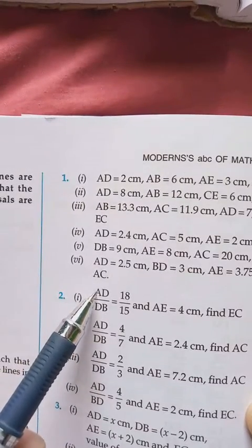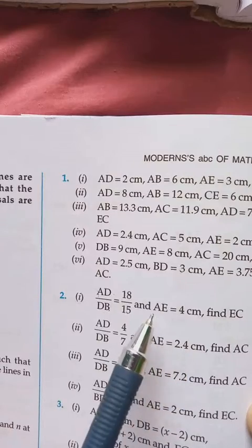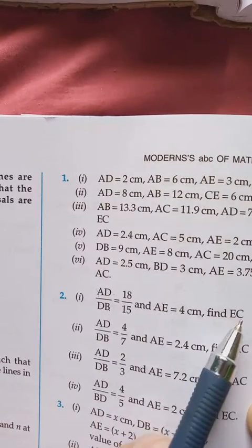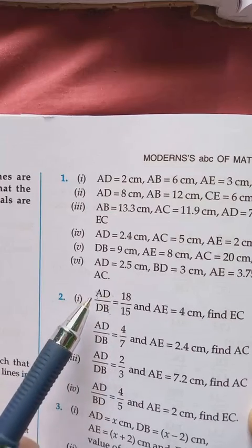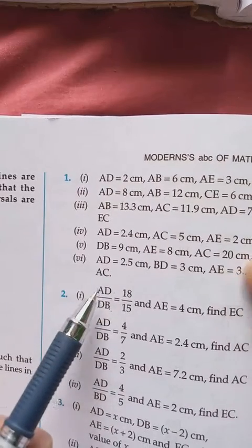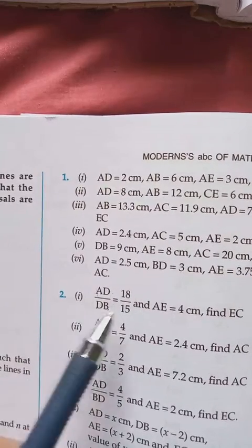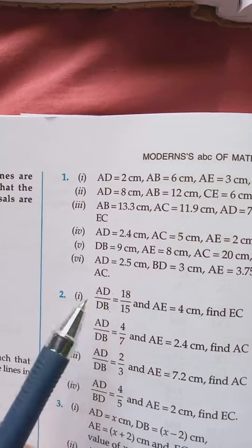Here it's already given AD by DB. It's given AE. We have to find EC. So since they give us AD by DB, let's follow this one only. And in some books this question is wrong. Please correct it.